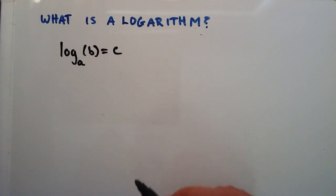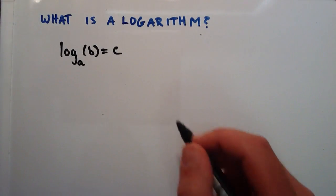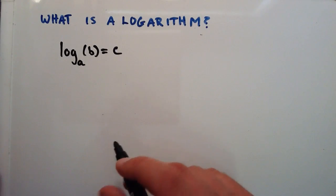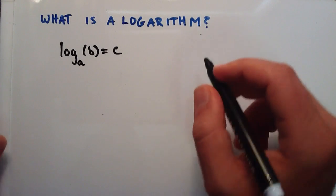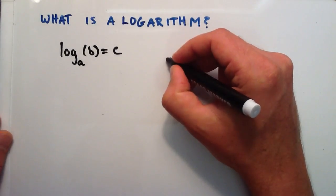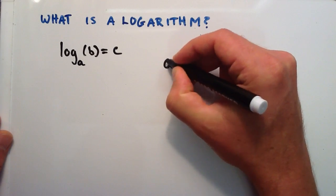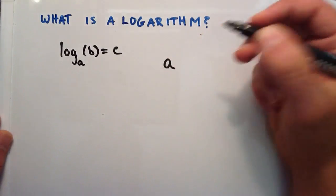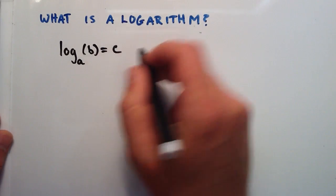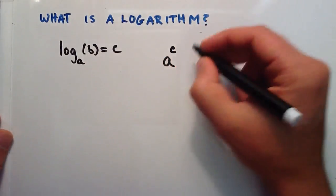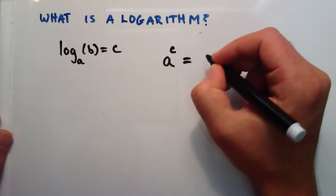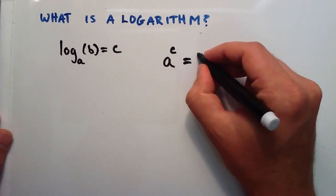So what in the world does this mean? This is kind of weird. Where this comes from is it's basically another way to think about a statement like this: if we have some number A and it's raised to the power C, then the answer is equal to B.